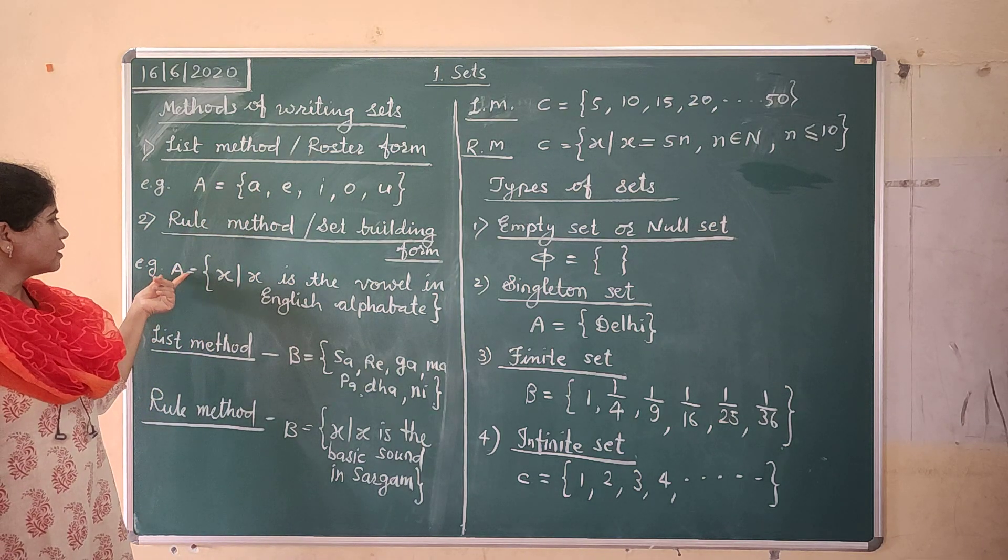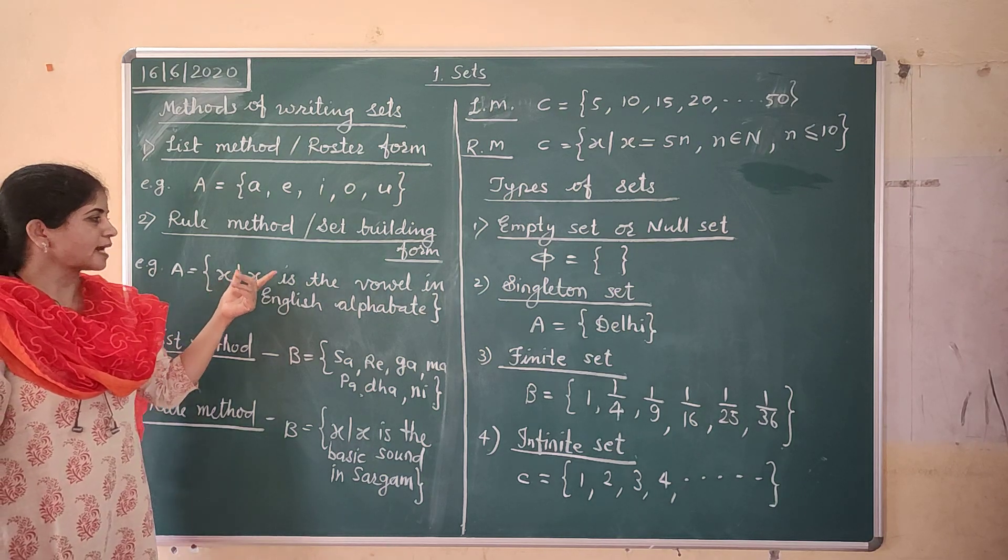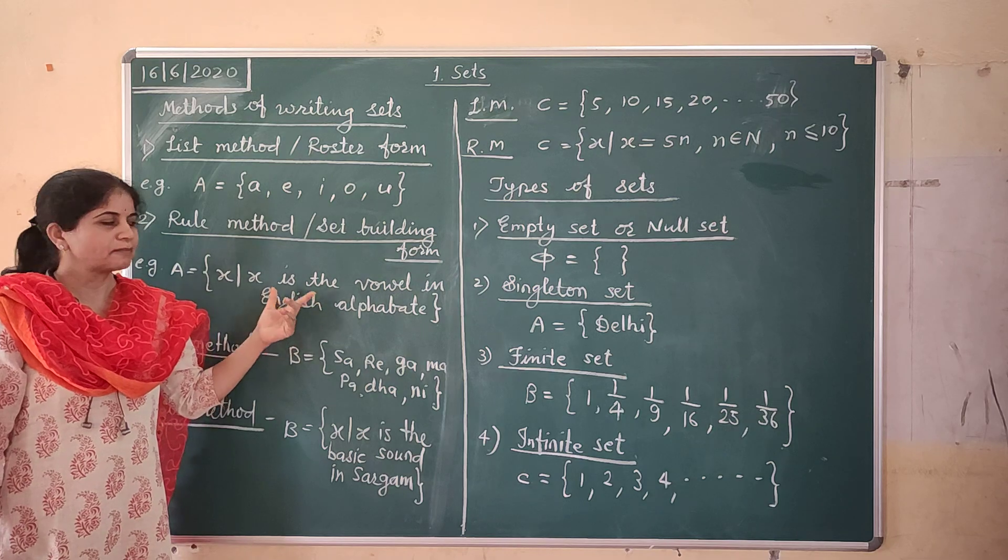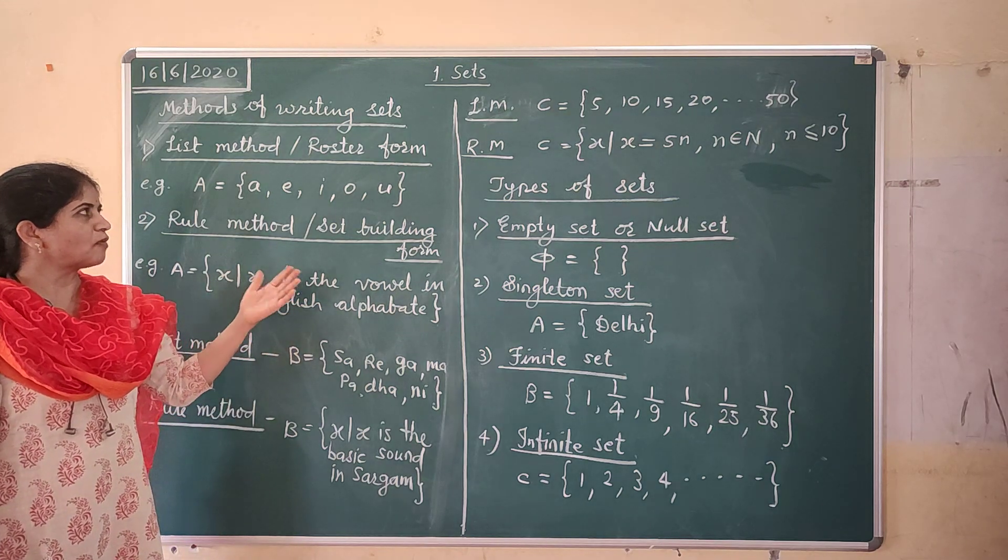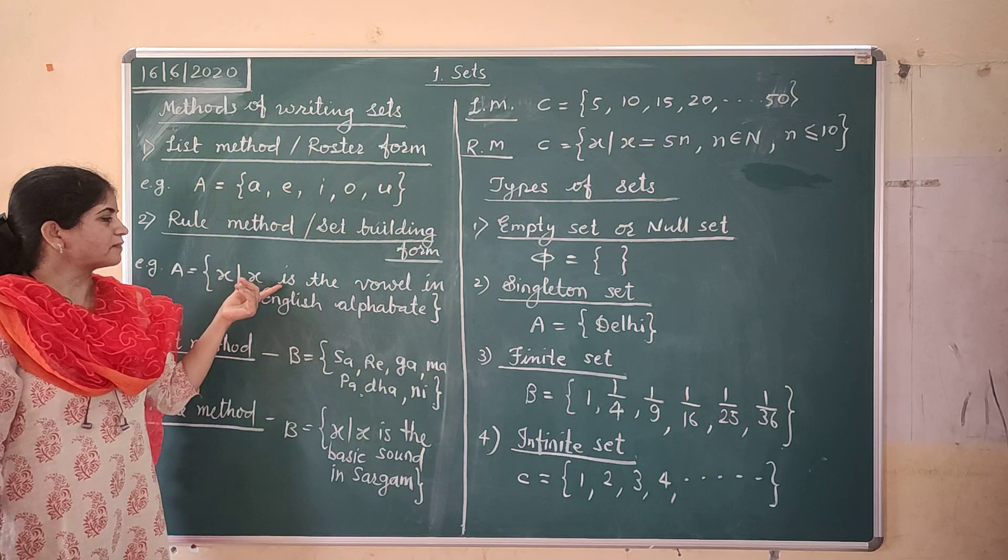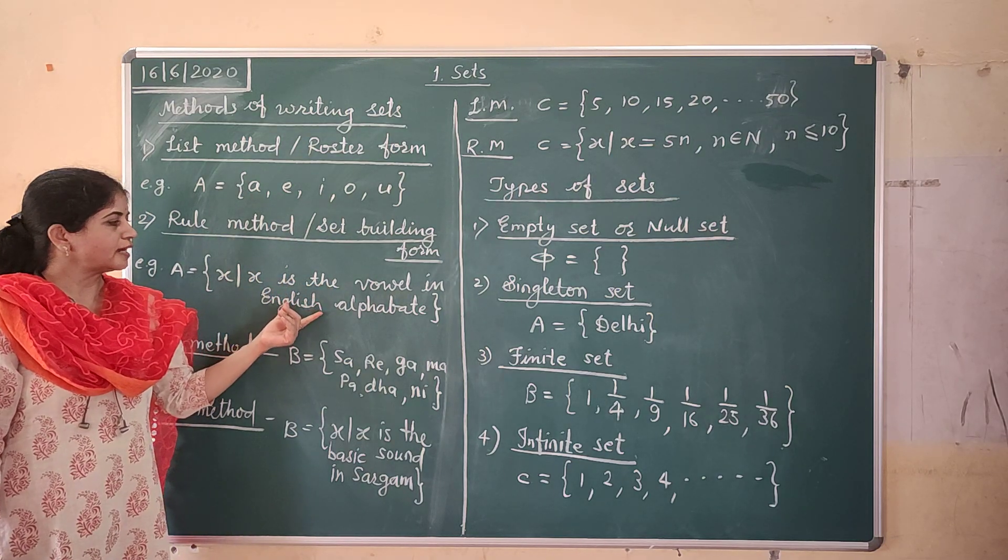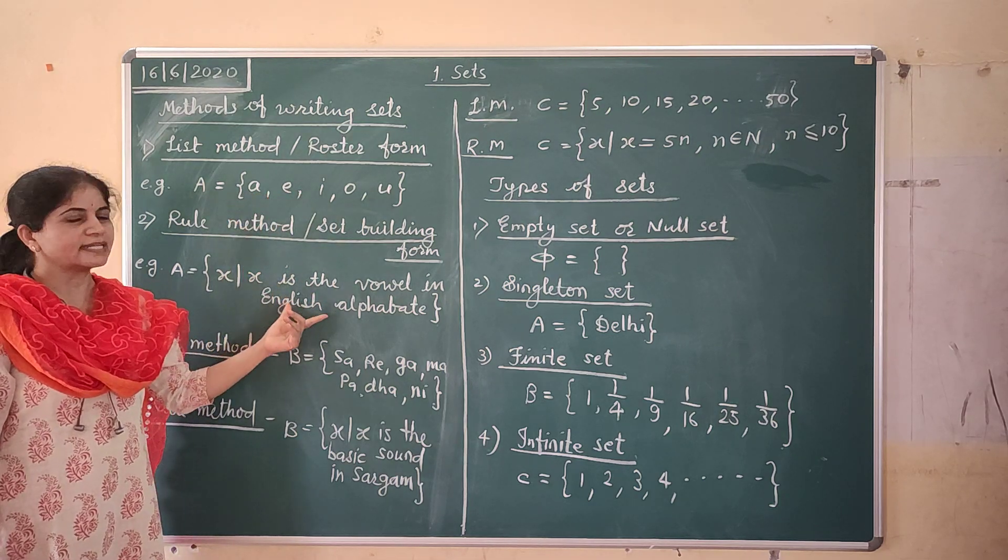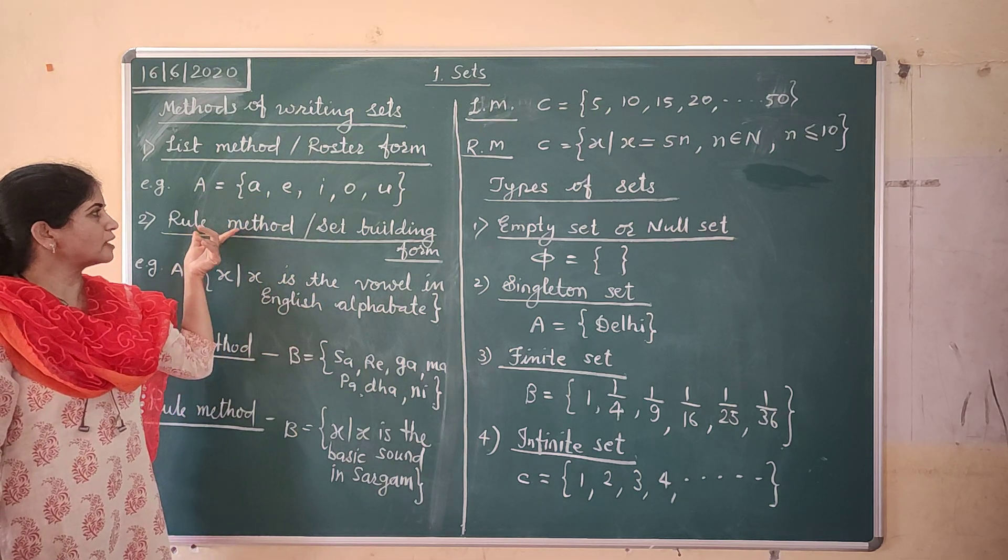So here while writing sets we are not directly writing the elements or objects in the set but we are writing the rule for those objects. Means after reading the rule we can understand which objects are present in the given sets. So that is called as rule method.